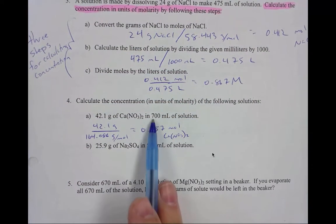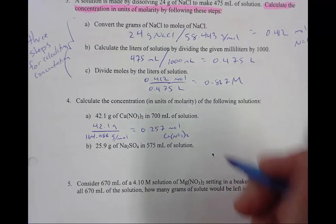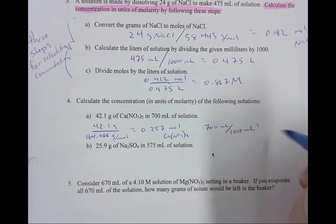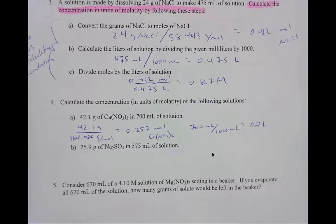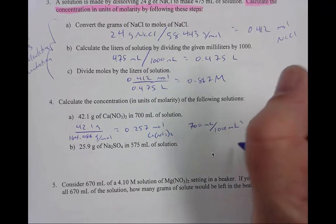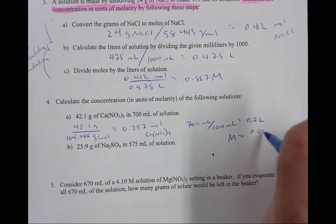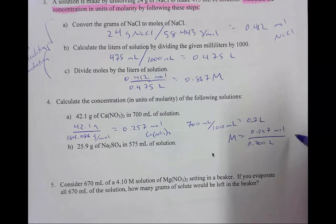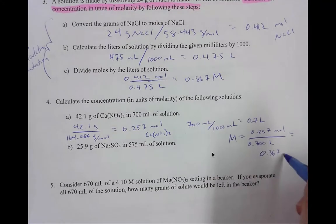Remember guys, next we need to look, we need to make sure we're in liters. We're given milliliters, so we need to convert. Remember, to convert, all you do is divide by 1,000. So 0.7 liters. And then lastly, we need to calculate the molarity. Molarity is moles divided by liters. So we would do big M equals our moles, 0.257, over our liters, 0.7. Once you solve that, you find that the molarity is 0.367 M.